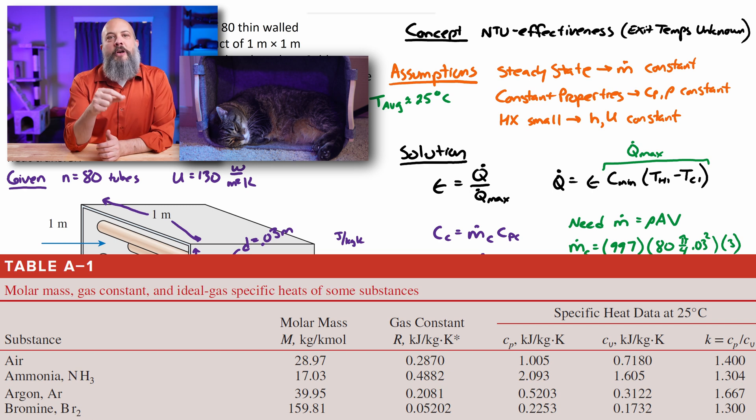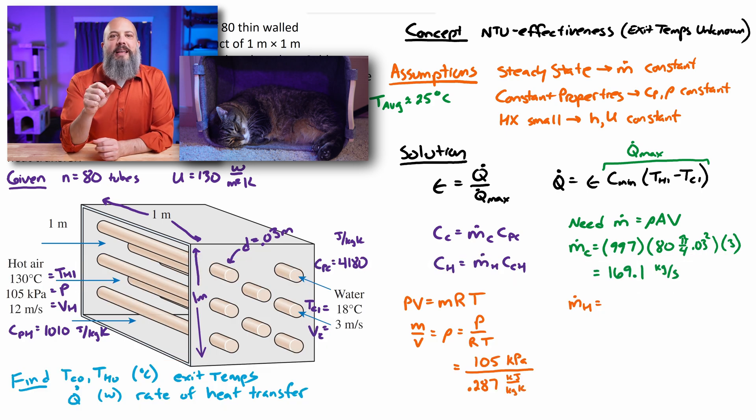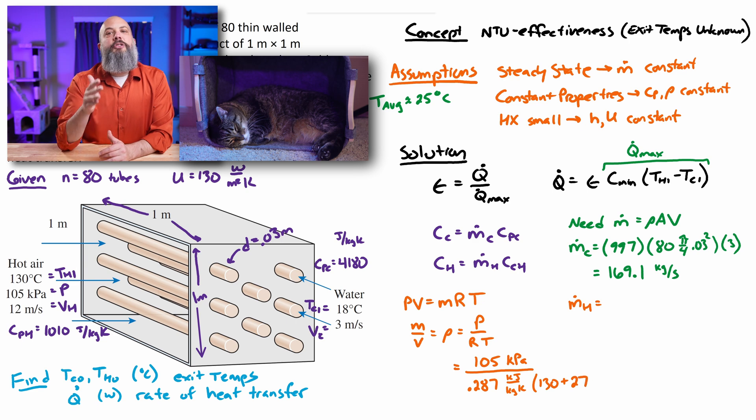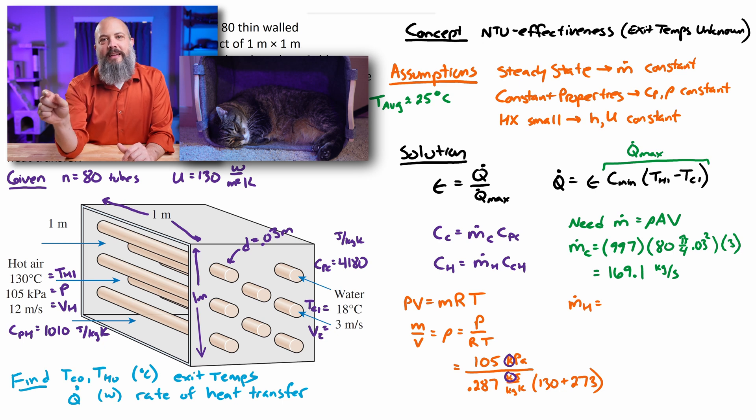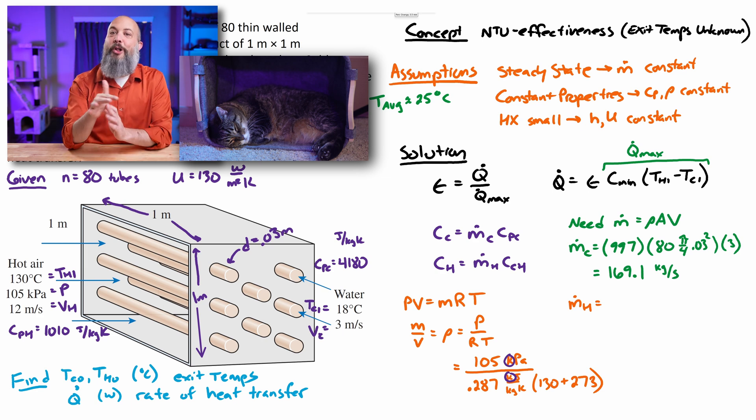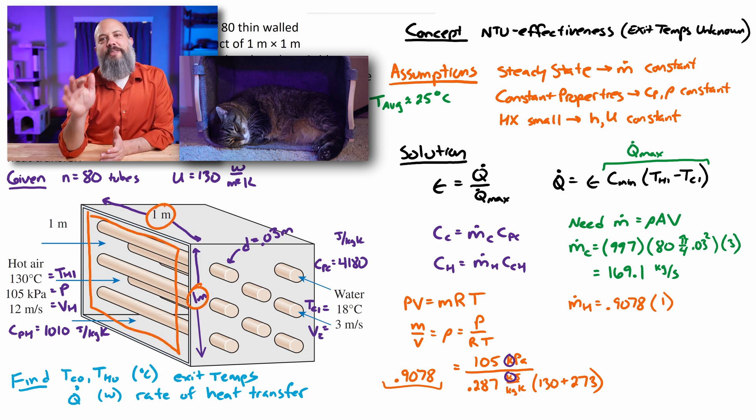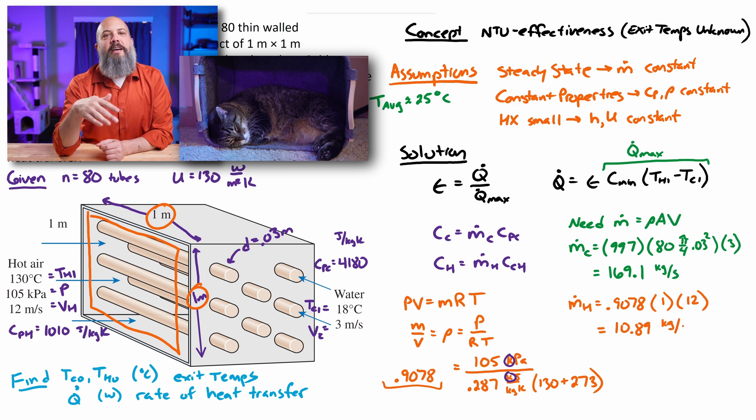And I can look up a value of R for air of 0.287. And then my temperature is going to be the 130 degrees Celsius plus 273. I have to convert this to Kelvin in order to make my units cancel out. I also had to be really careful since my 105 is in kPa. My 0.287 is also in kilojoules. So the k's here, the kilo terms will also cancel out. And this will give me a density of 0.9078. And I can plug that back in with the cross sectional area of 1, velocity of 12, get 10.89 kilograms per second of air.